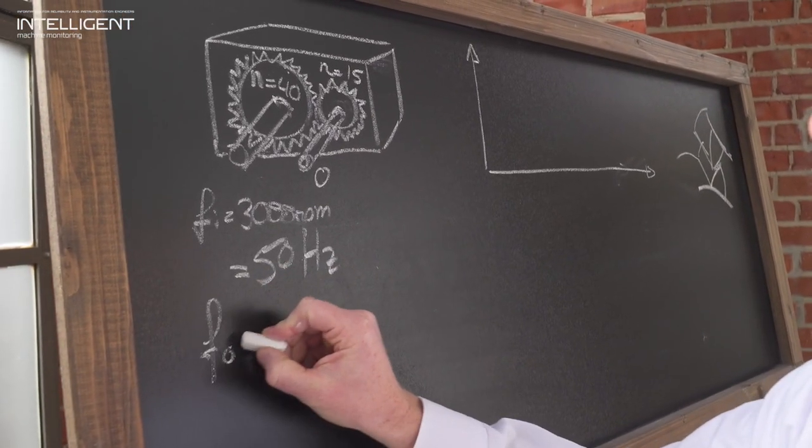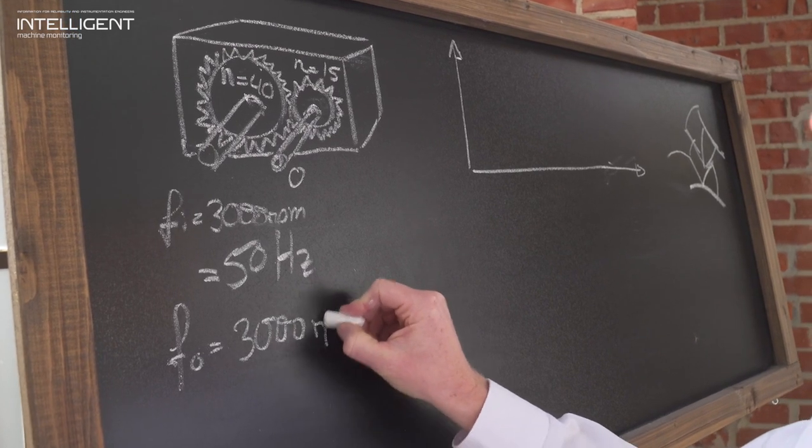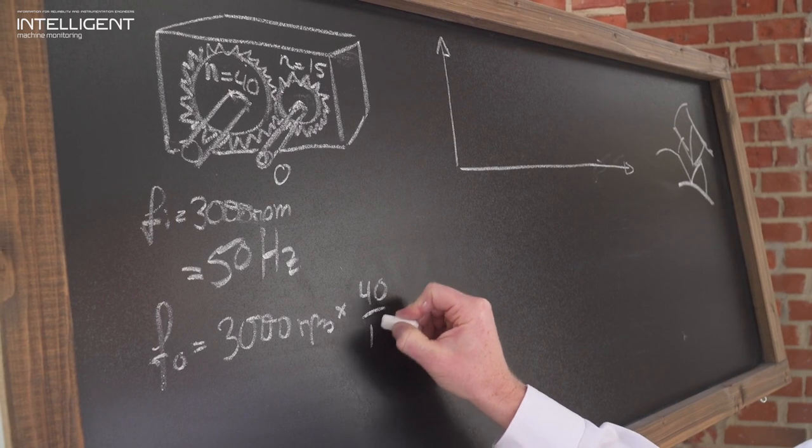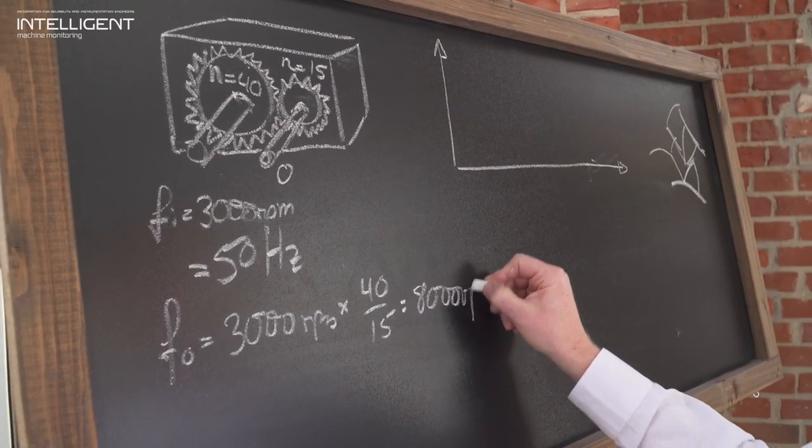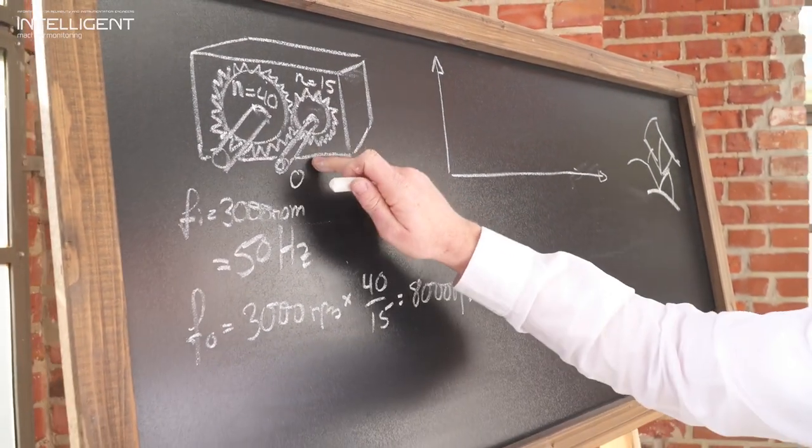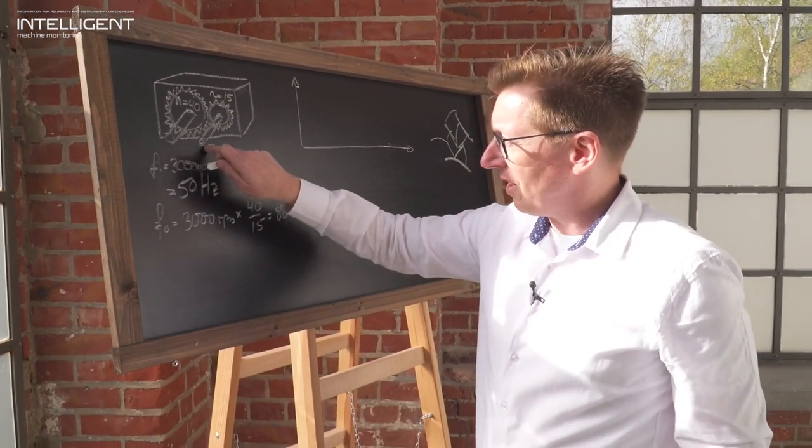so the speed of the output shaft, the FO in this case, would be 3000 rpm times 40 divided by 15, which is 8000 rpm. So the output shaft in this example would turn at 8000 rpm.